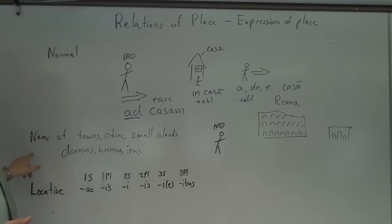Except, here we go. Name of town, city, small islands, domus, humus, and rus are unique.